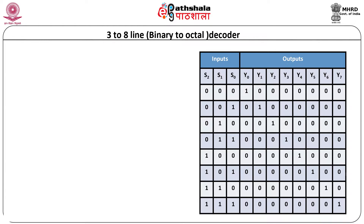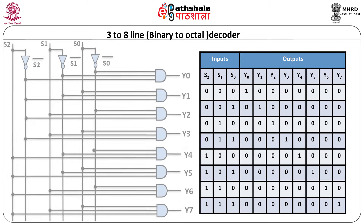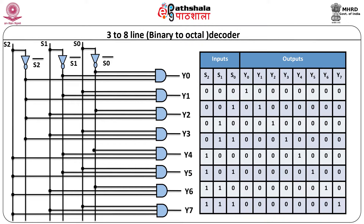The logic diagram for the 3-to-8 line decoder generates 8 product terms corresponding to each binary code applied at the 3 inputs. Thus there is a need for 8 three-input AND gates and 3 NOT gates to generate the complement of the input along with the uncomplemented input. In many decoders there is an enable function: a low level on inputs E1 and E2 and a high level on the third input E3 is required in order to make the enable gate active high and enable the decoding action. These 3 enable inputs are extra, other than the binary inputs.